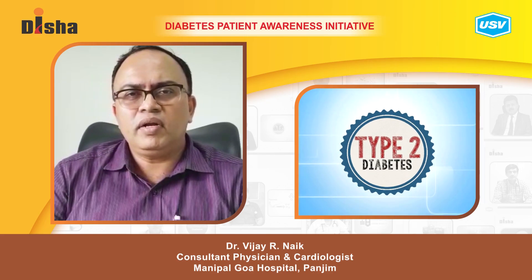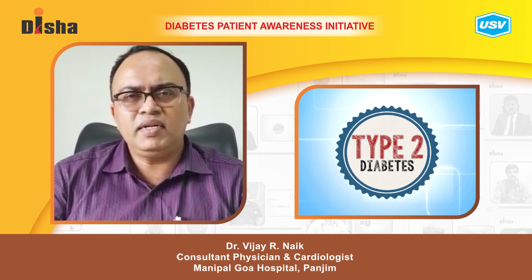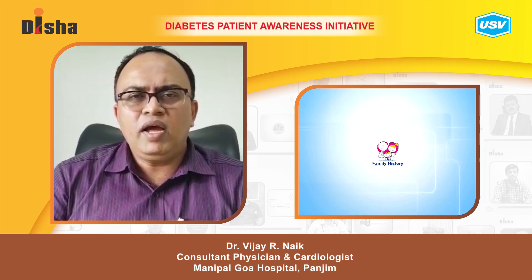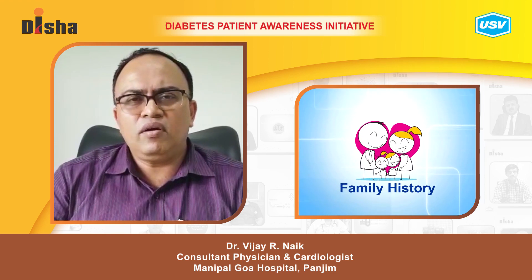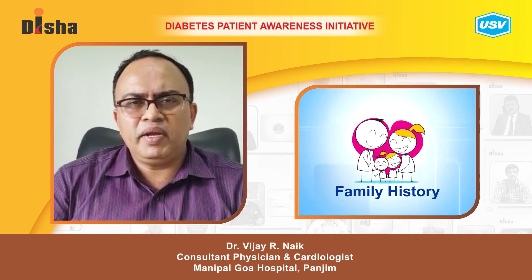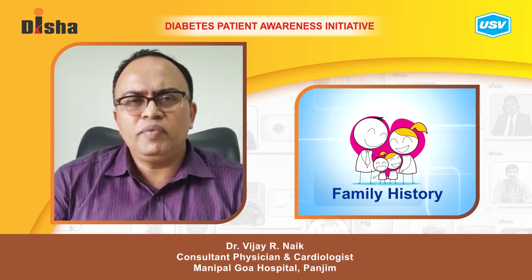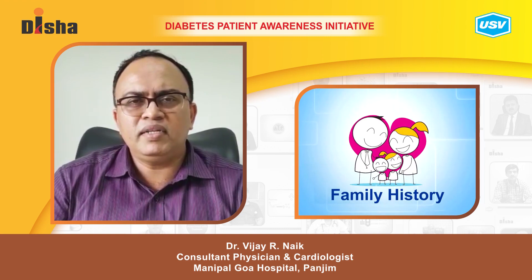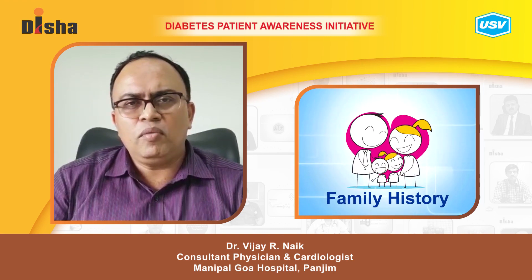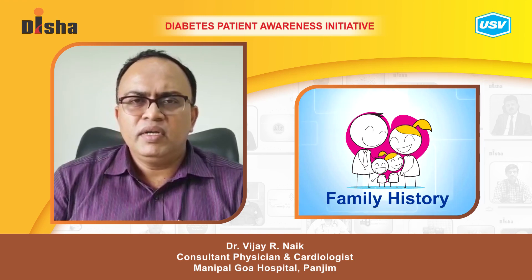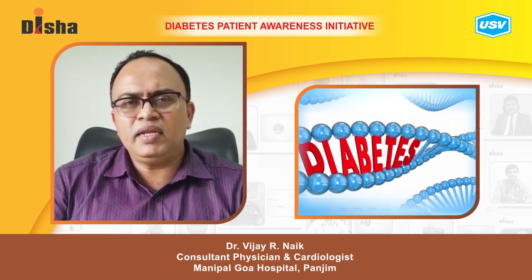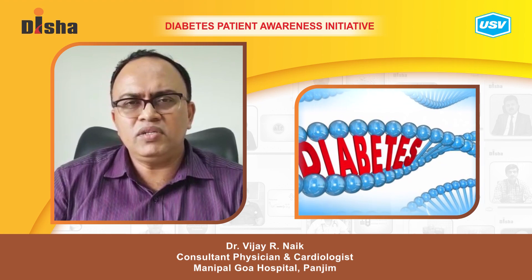Today we will speak about type 2 diabetes and its relation with heredity. Type 2 diabetes is very common in the offspring of parents who have diabetes, so we say diabetes runs in the families. Type 2 diabetes is more commonly transferred to the children, though it is not absolutely genetic — other external conditions also contribute.